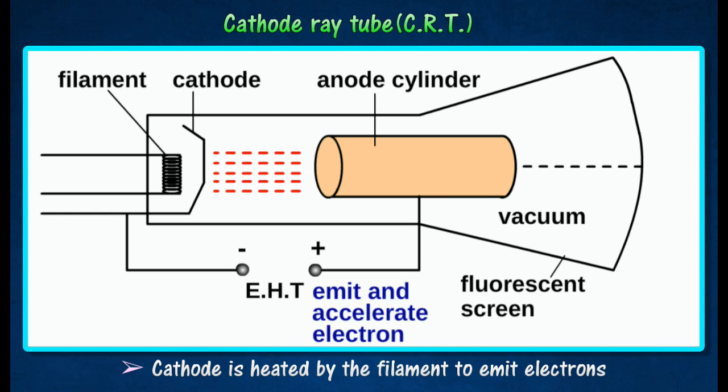A high voltage is applied across the anode and cathode so that the electrons are accelerated to a high velocity towards the anode. These electrons converge as a narrow beam of electrons after passing through a fine hole in the anode cylinder.